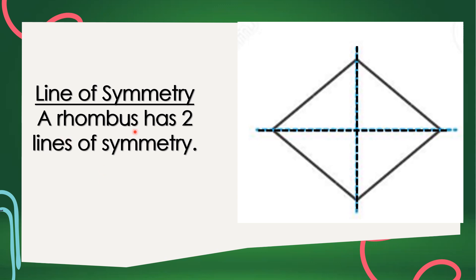Again, a rhombus has two lines of symmetry. One, and two.